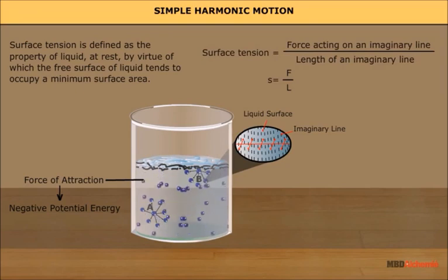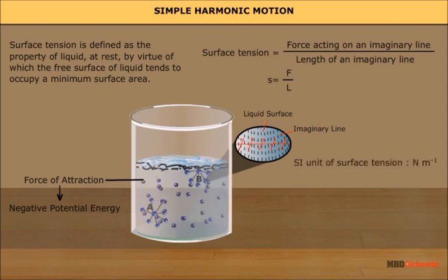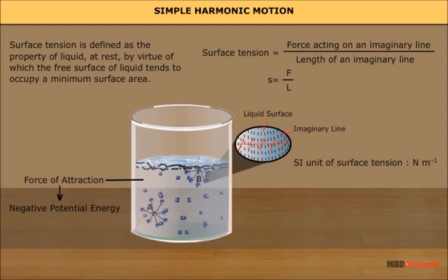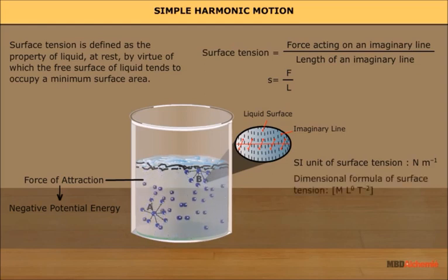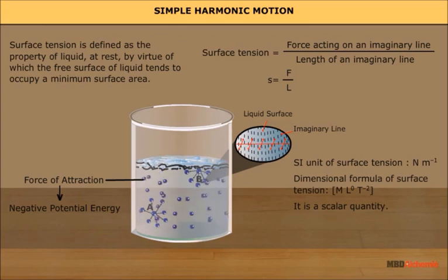Surface tension is defined as the force acting on an imaginary line divided by the length of that line: S = F/L. It should be noted that surface tension is a property of liquids only and is a molecular phenomenon. The value of surface tension of a liquid decreases with increase in temperature and with the addition of impurities.